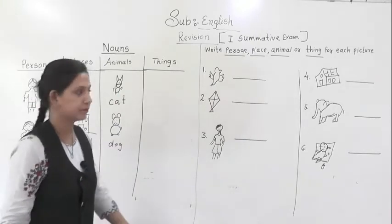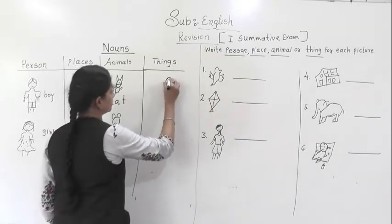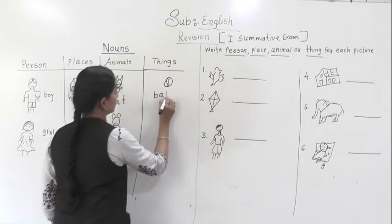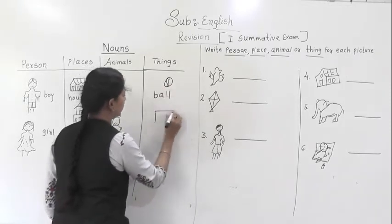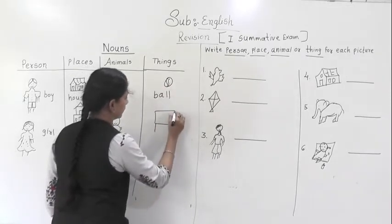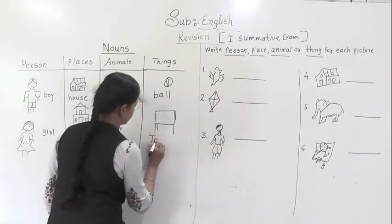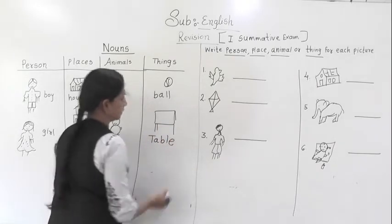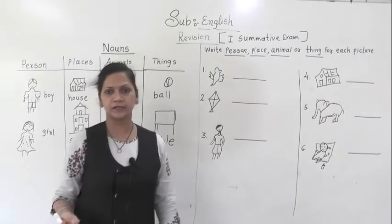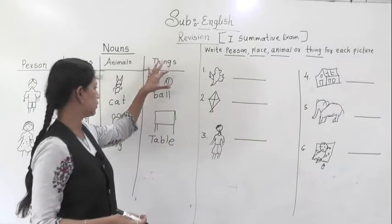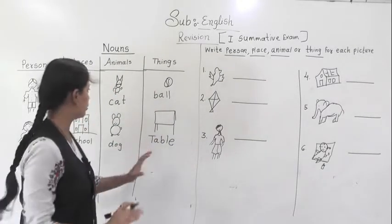Now, the last part is things. So, ball, then table, chair. So, many things. These all items will come in things. So, have you understood?